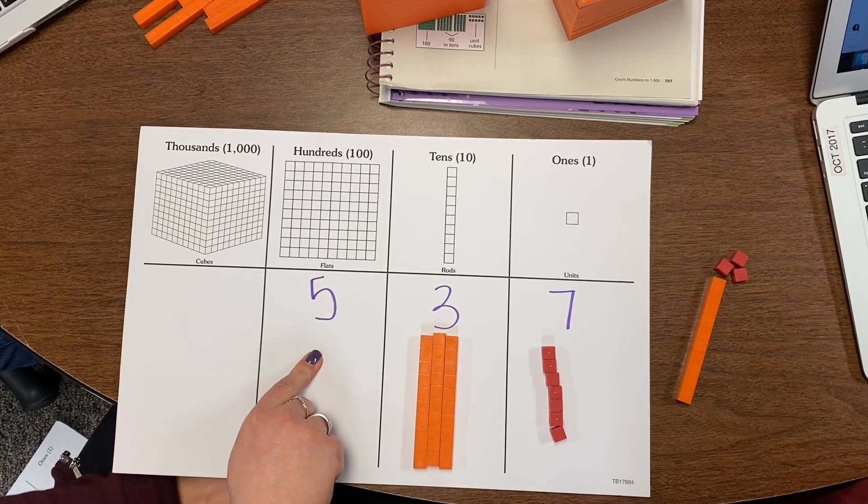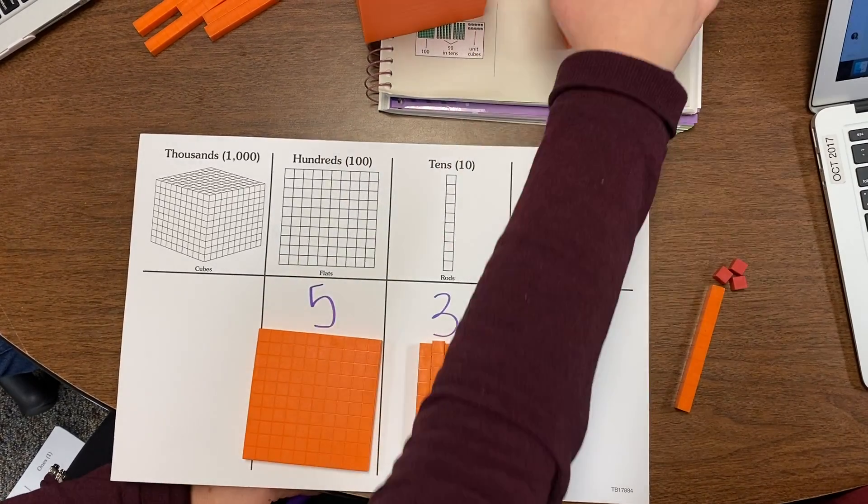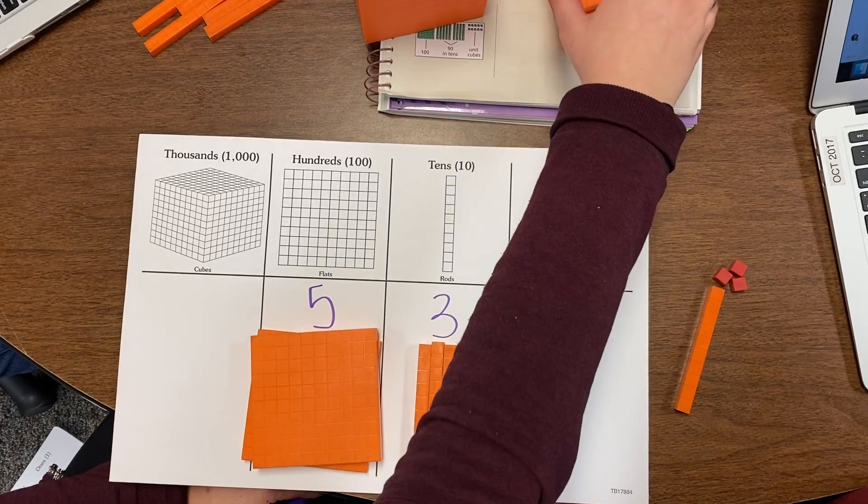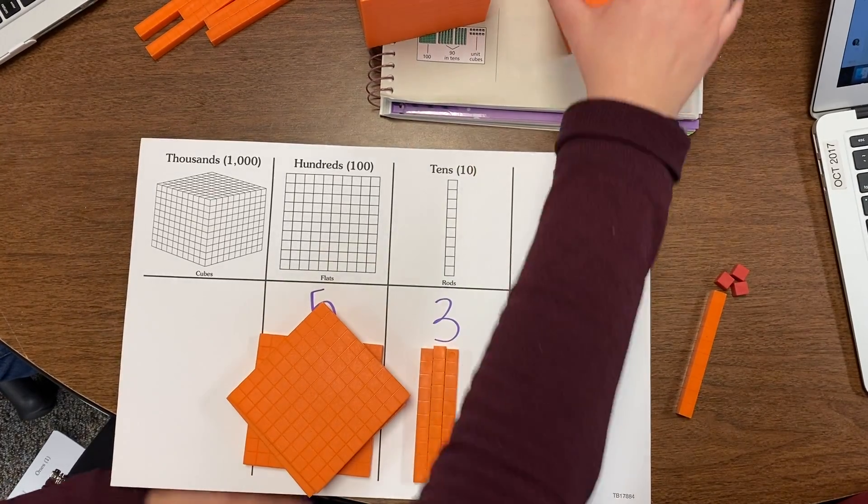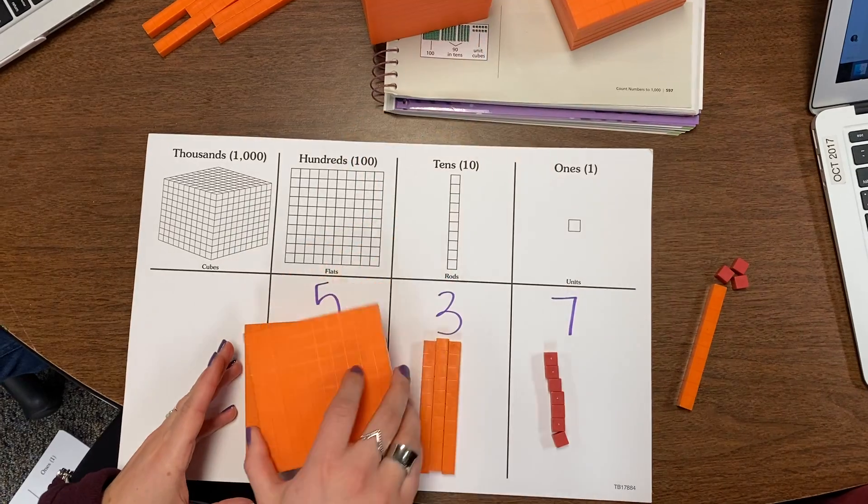Over here we need 500. So I have 100, 200, 300, 400, 500.